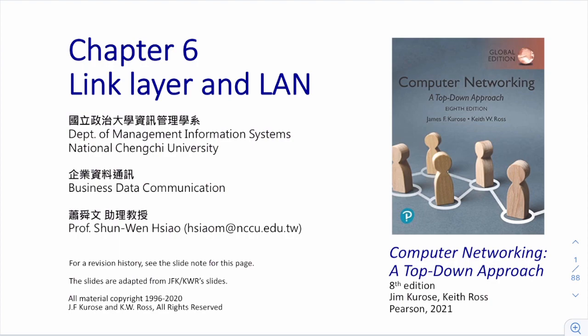At layer 2, communication between two hosts relies on layer 2 interfaces — the network interface card, or NIC. There are several different layer 2 technologies. For example, we can send signals from one interface card to another by using a copper wire, a wireless signal, fiber, or a satellite.